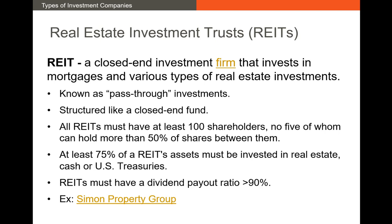Next we have REITs. REITs are very much like a closed-end mutual fund. The big difference is that REITs invest primarily in real estate assets — they're a closed-end investment firm that invests in either mortgages or physical real estate properties. REITs are what we call a pass-through investment, meaning any income received by the REIT is passed on directly to the investors, so there's no double taxation.